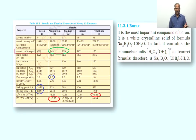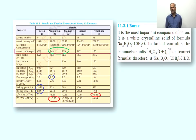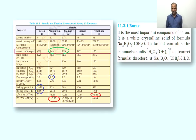Among Group 13 element compounds, Boron compounds are important. Borax is the most important compound of Boron. Borax is a white crystalline solid having formula Na₂B₄O₇·10H₂O. It is a polynuclear compound with many central atoms — basically four Boron atoms all acting as central atoms. So it is a tetranuclear unit having structure [B₄O₅(OH)₄]²⁻ and the correct formula is written in this tetranuclear unit form.